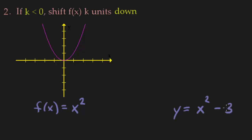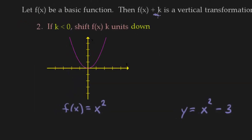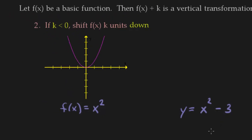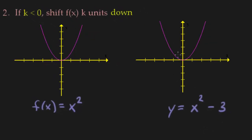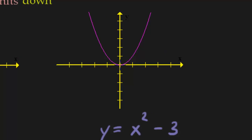So this is going to be a vertical transformation. It's going to be a shift down 3 units because k is negative 3. So down 3 units. So there's our basic function. Let's just move everything down 3. So this point right here, down 3, that's my new point.